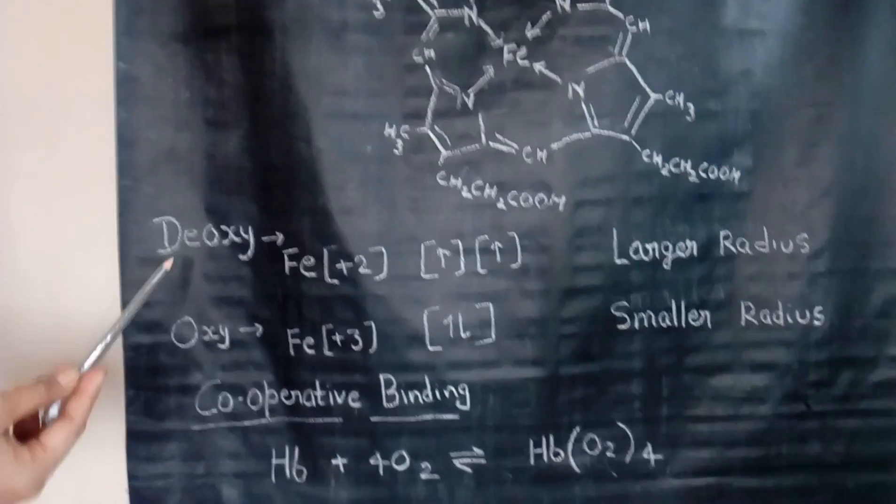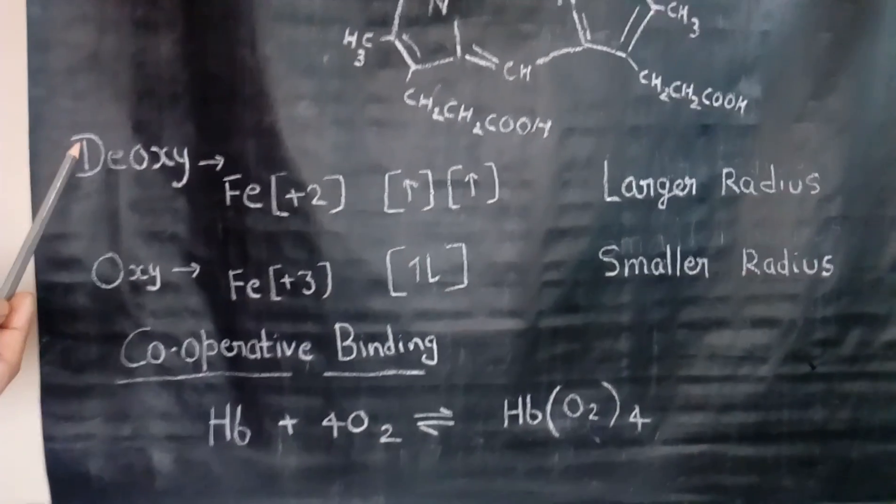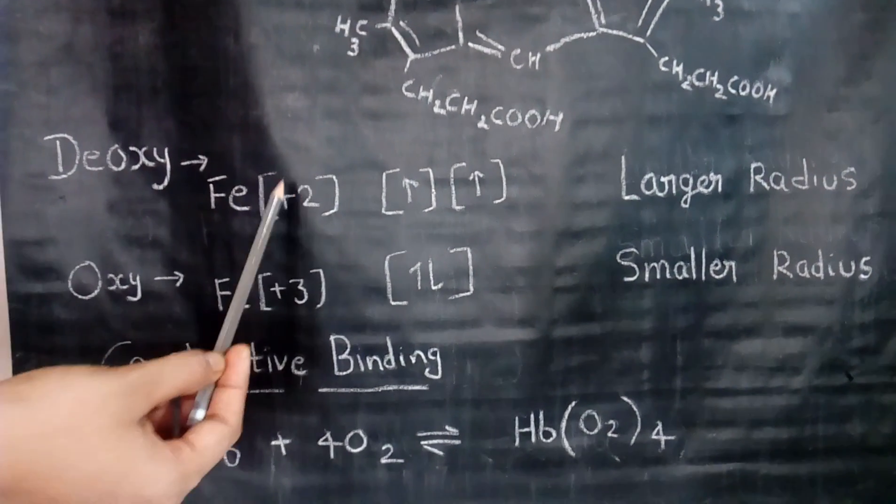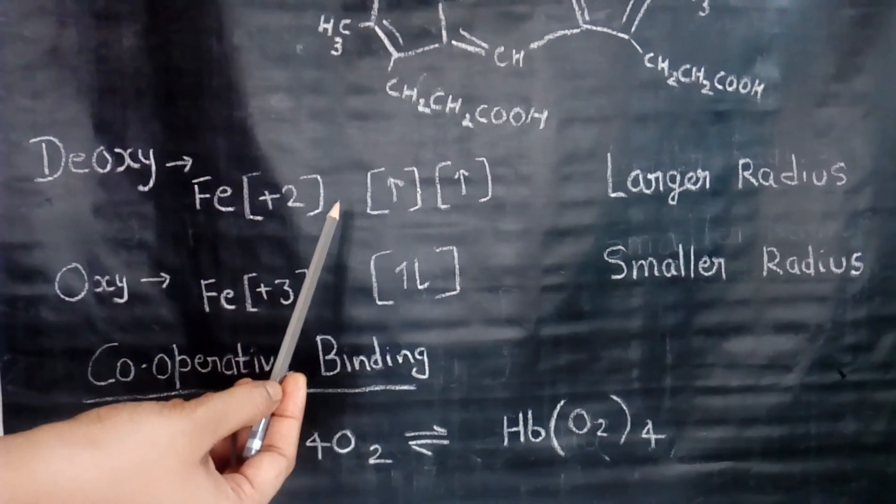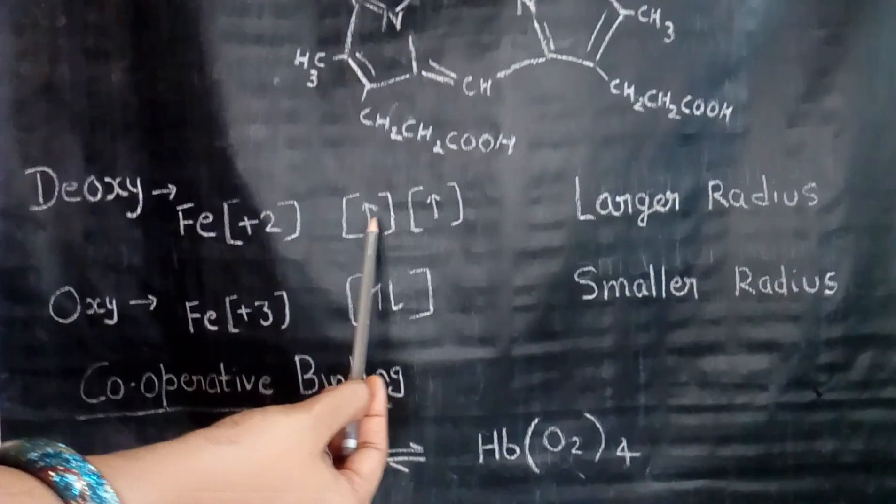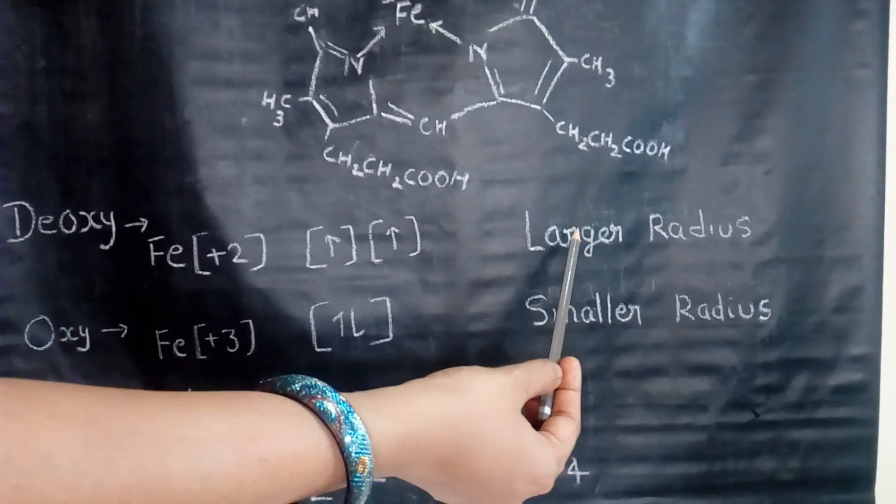In the deoxyhemoglobin, when the oxygen is not attached to heme group, the iron is in +2 oxidation state. Plus-2 oxidation state is a high spin state. The 2 electrons are of the same spin. They are present in different sub-shells, so the radius of iron is larger.